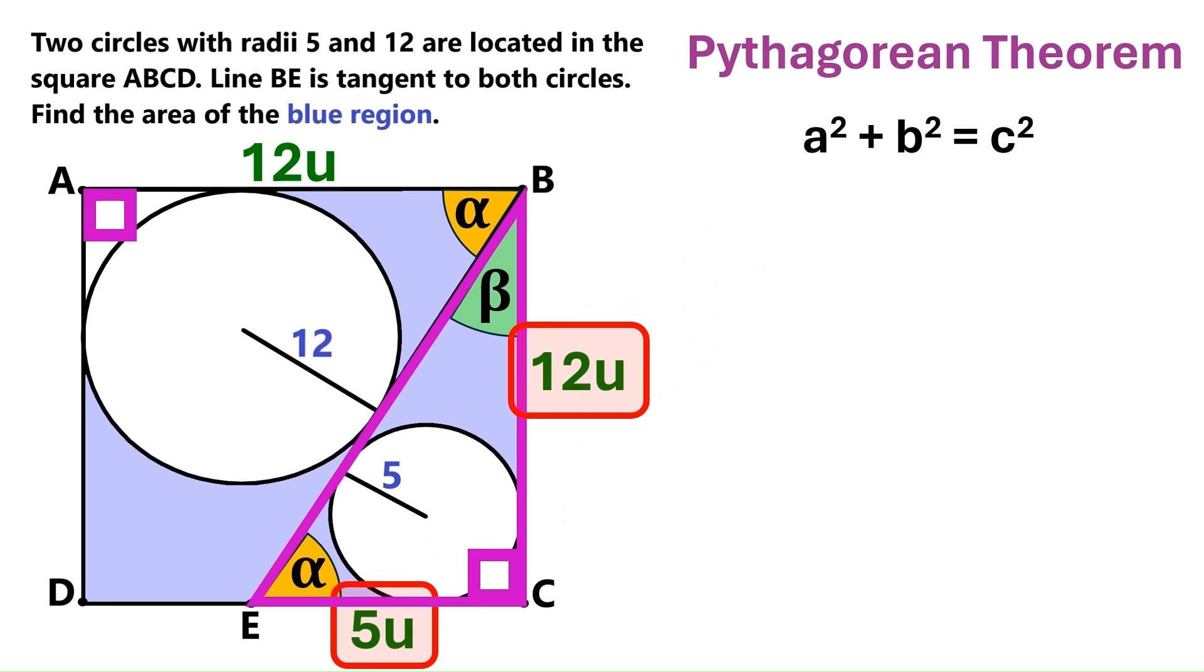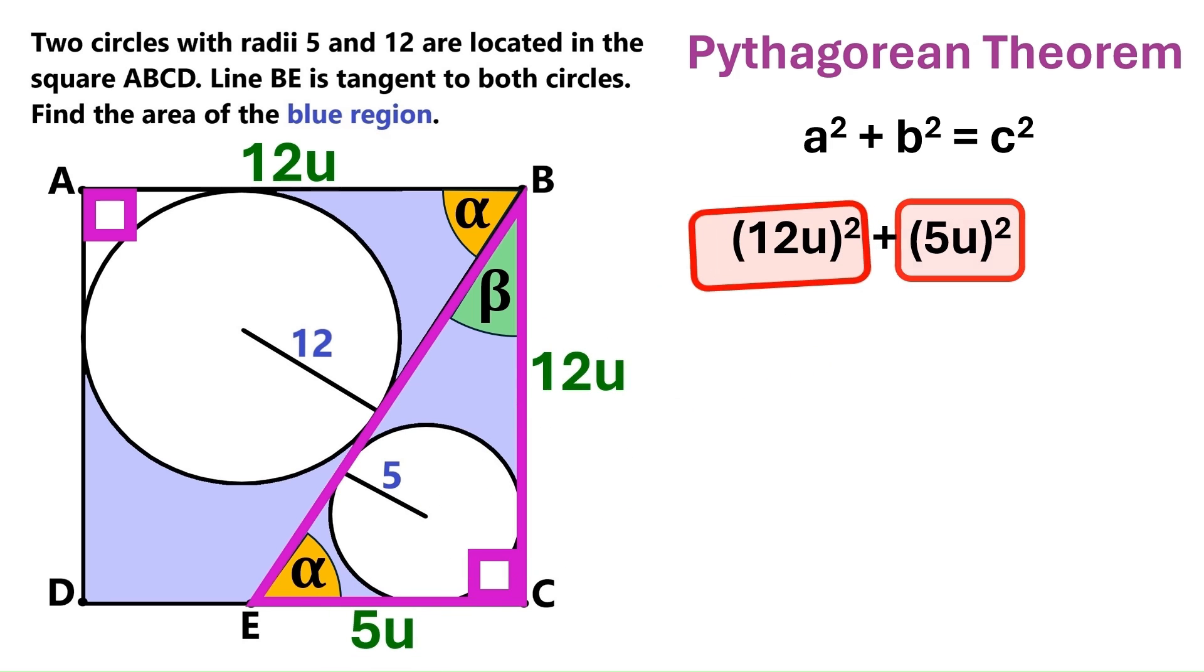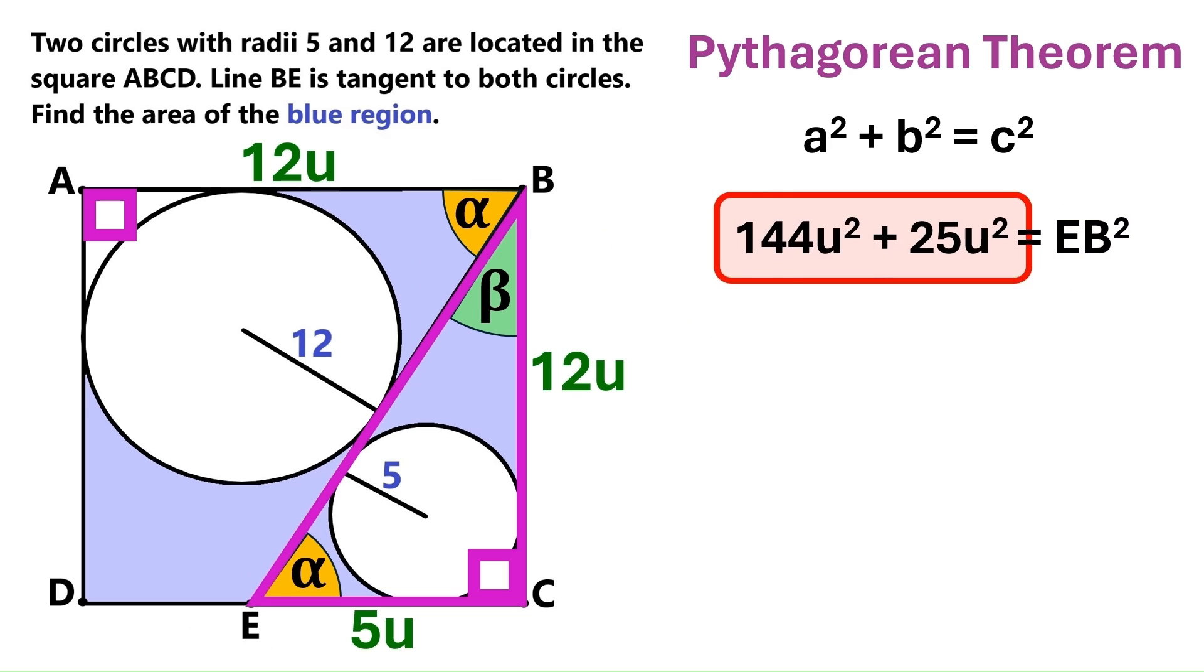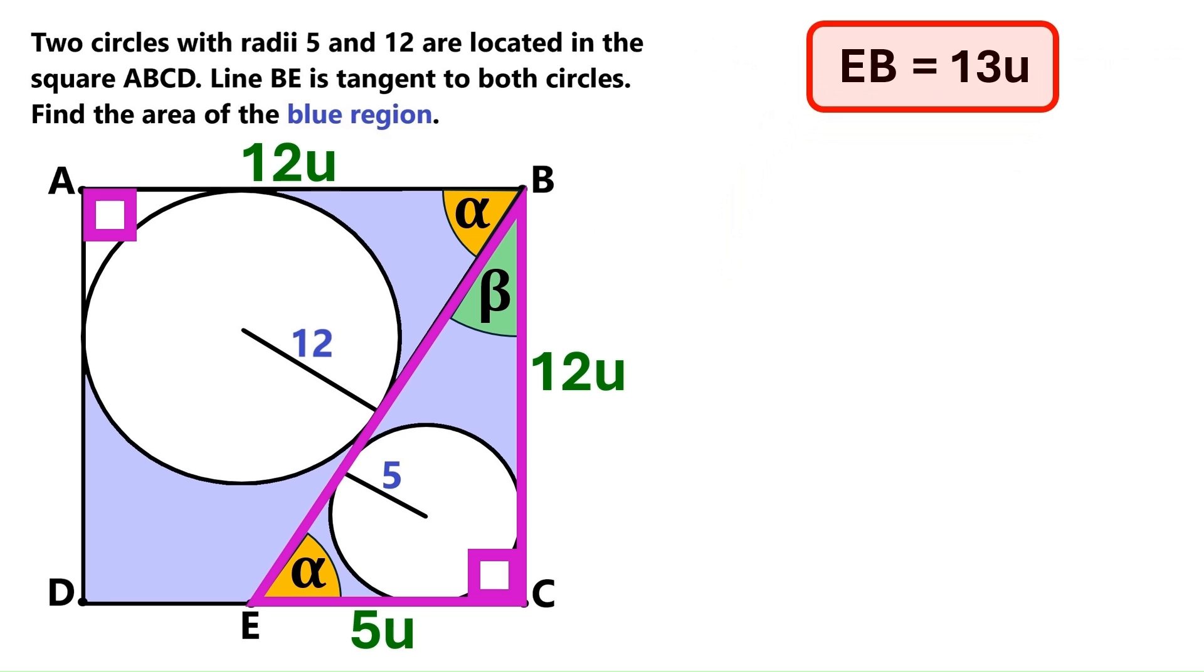These are the shorter sides of our right triangle. So we'll take their squares. And the longer side is this segment EB. So let's take its square too. I am doing the math for you, and EB turns out to be 13U. Let's keep this finding here.